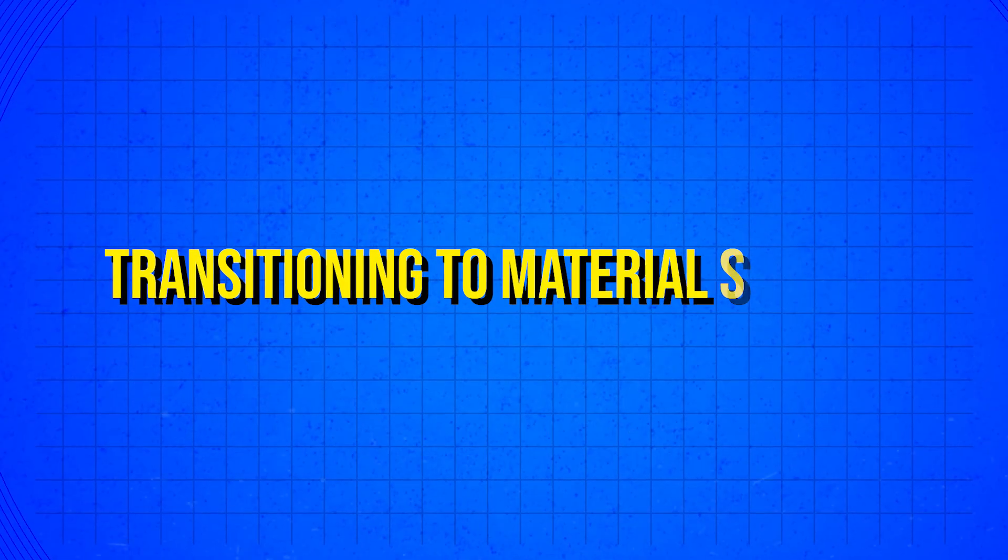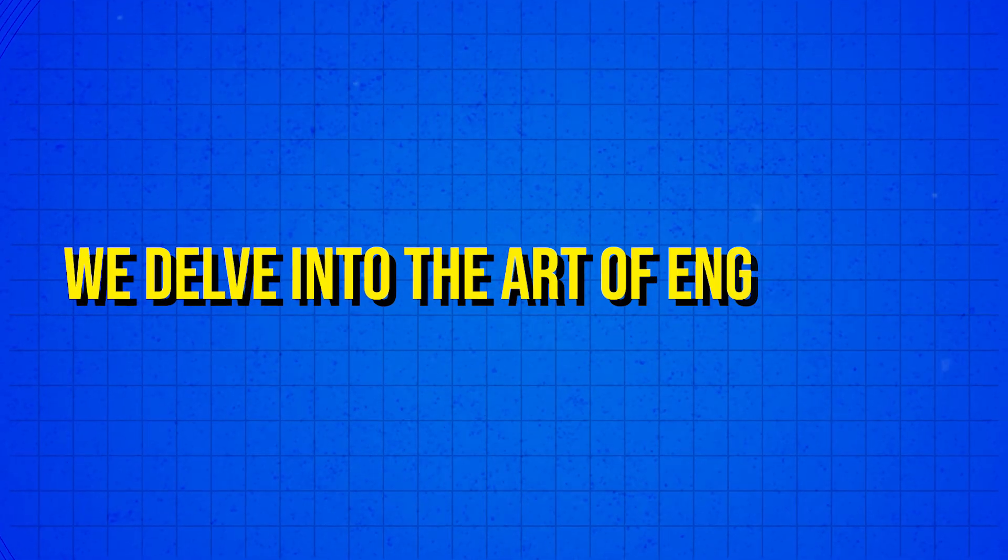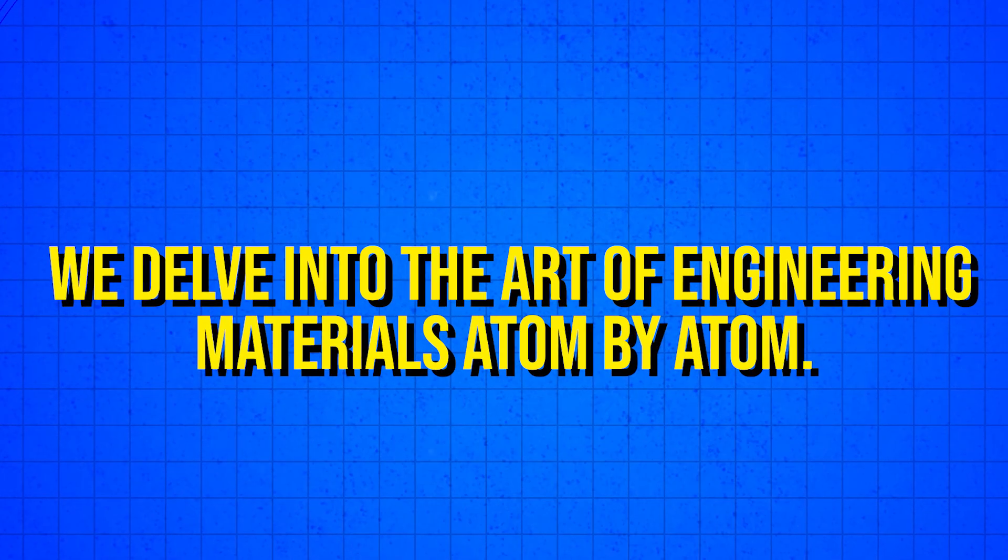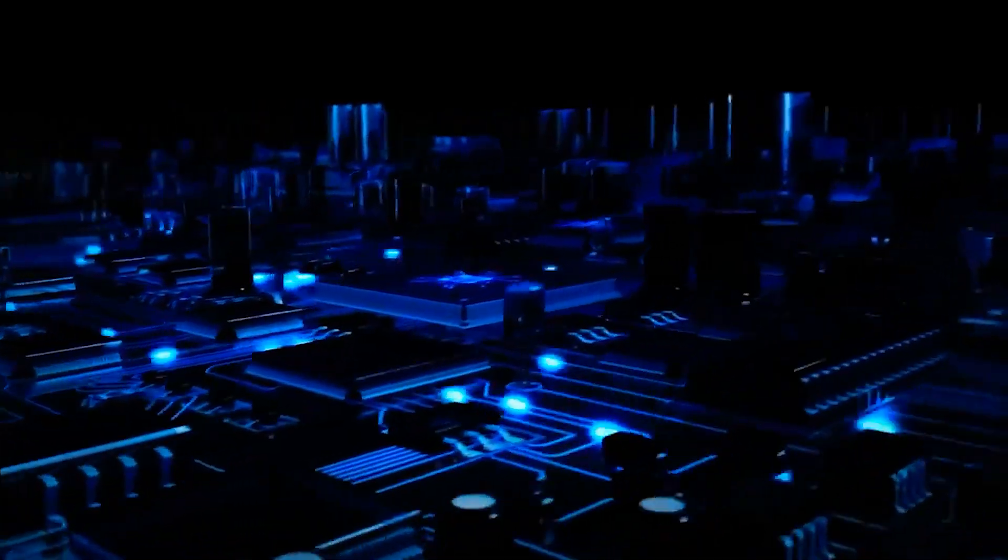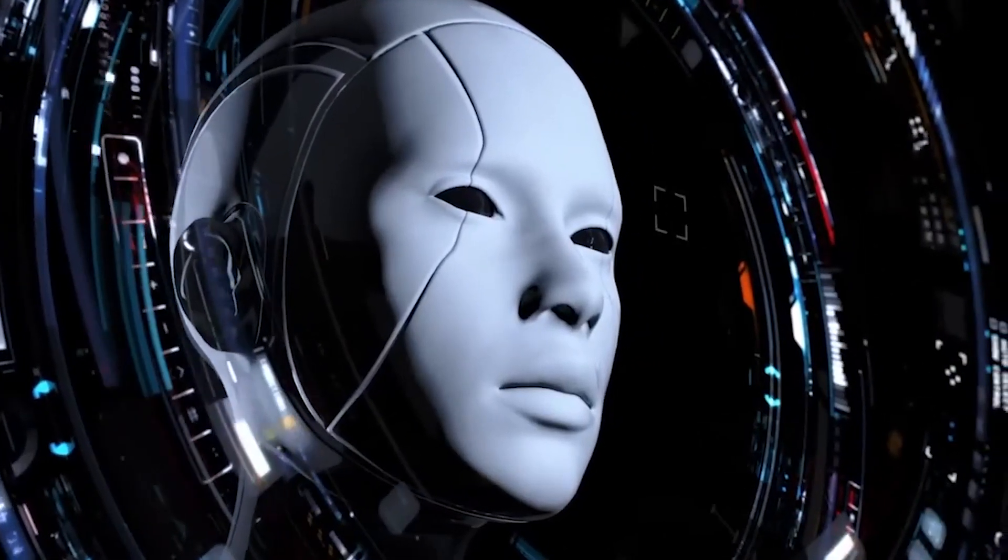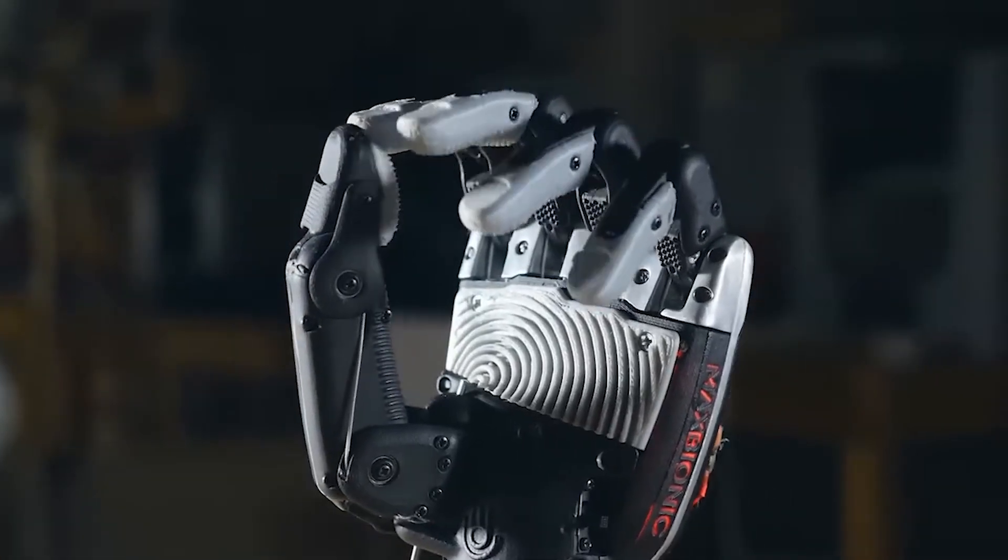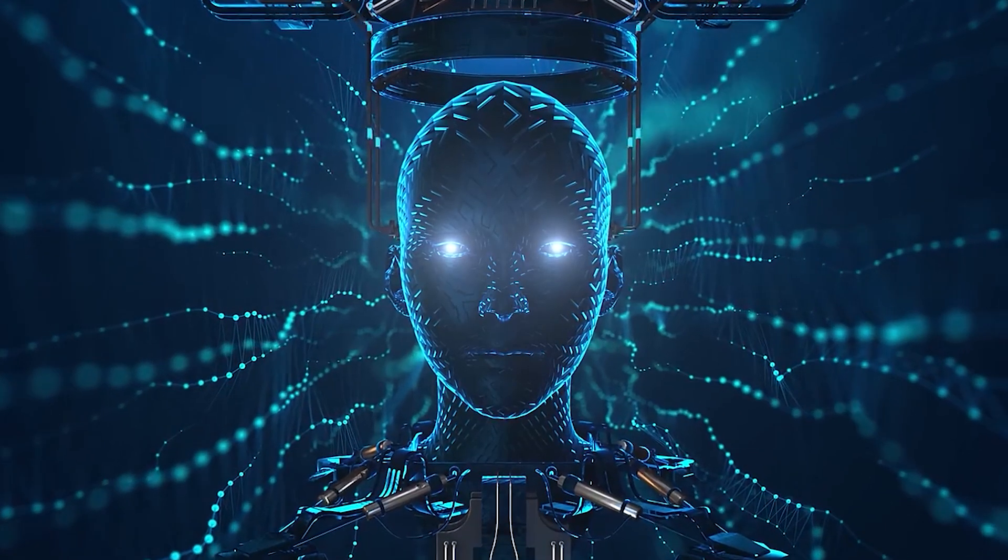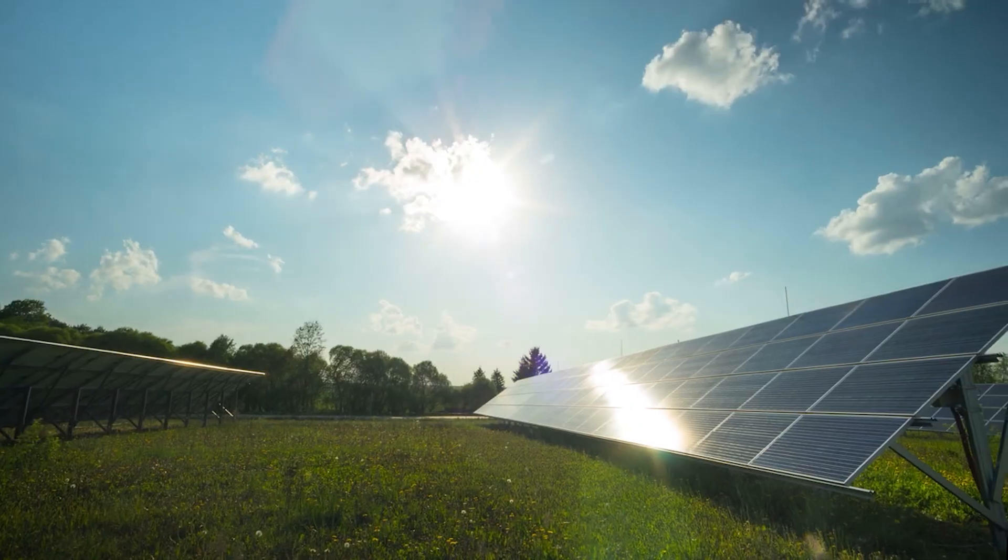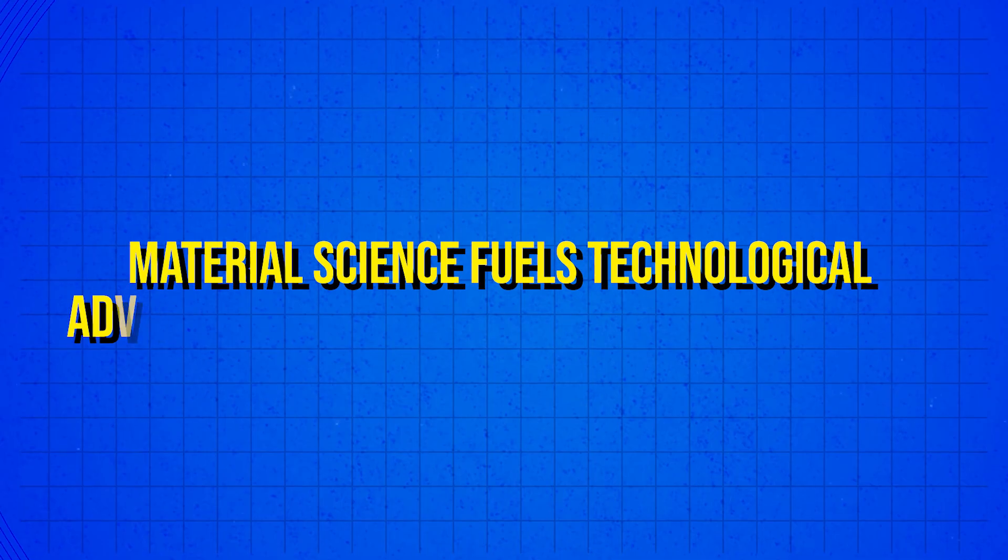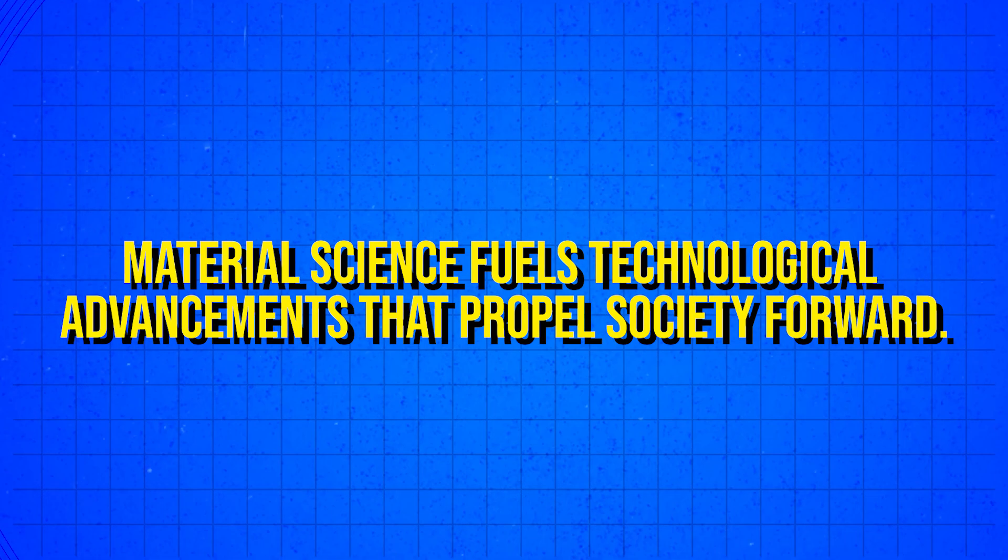Transitioning to material science, we delve into the art of engineering materials atom by atom. Understanding the optical and electrical properties of materials allows us to improve existing technologies and develop innovative solutions for challenges in various industries. From enhancing optical fibers to designing more efficient solar panels, material science fuels technological advancements that propel society forward.